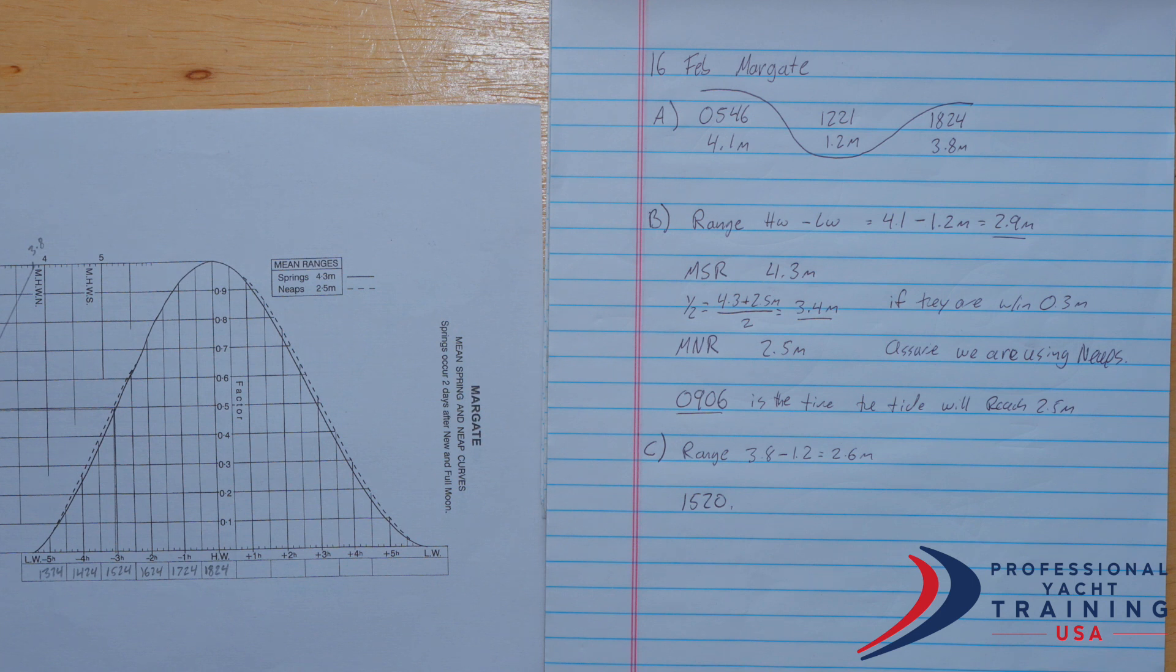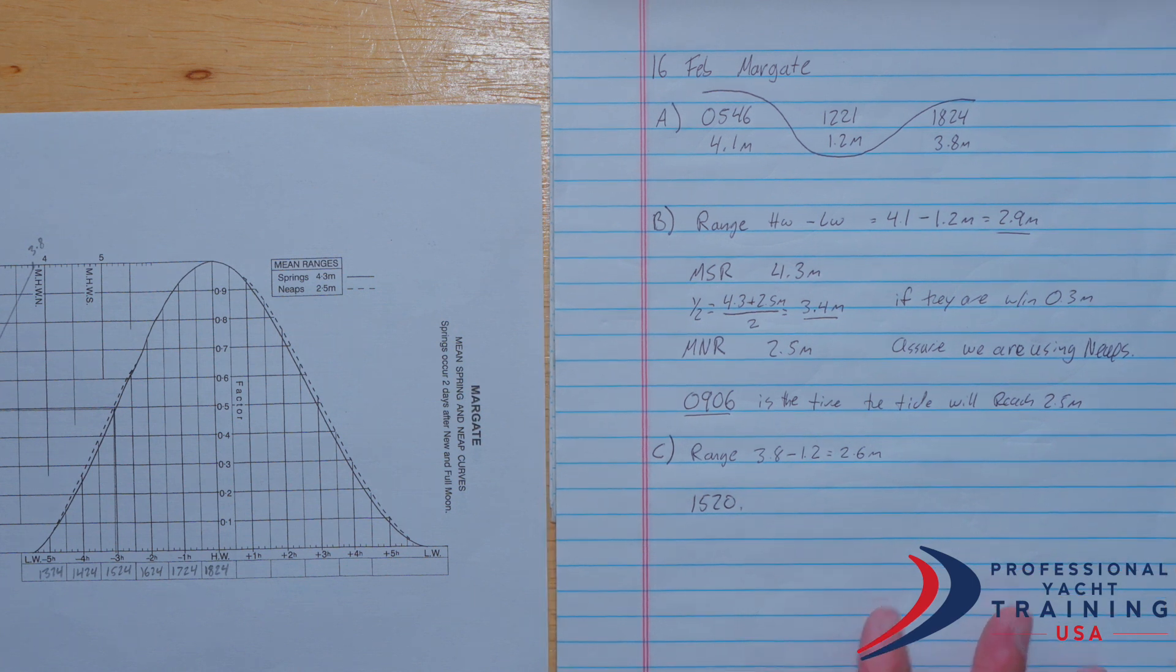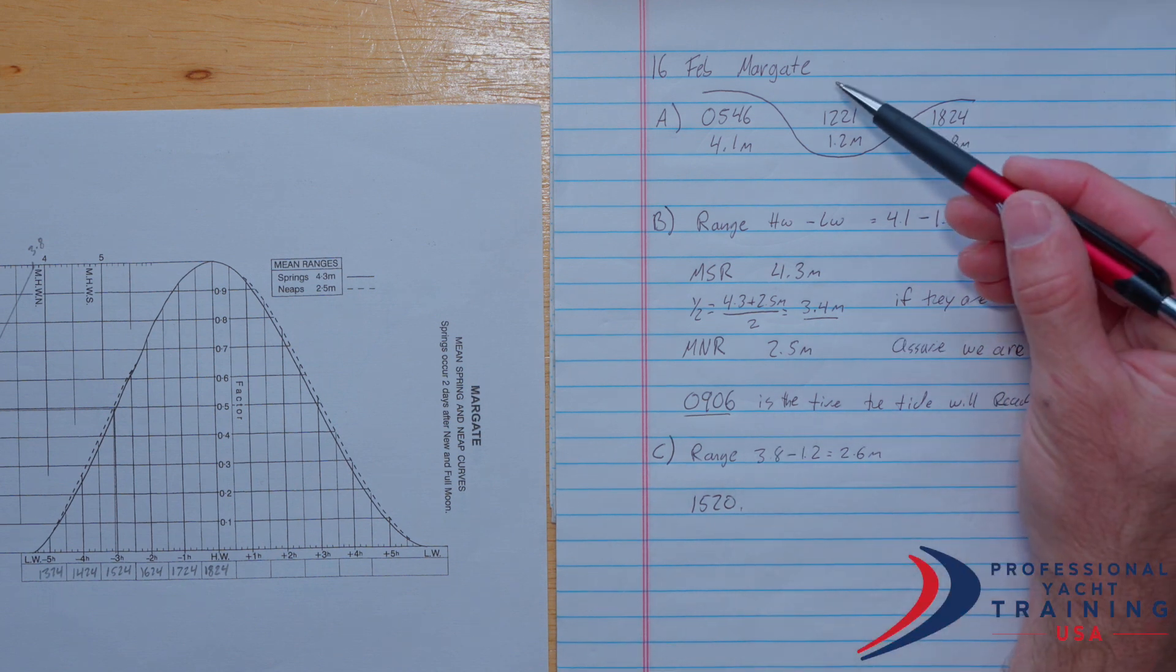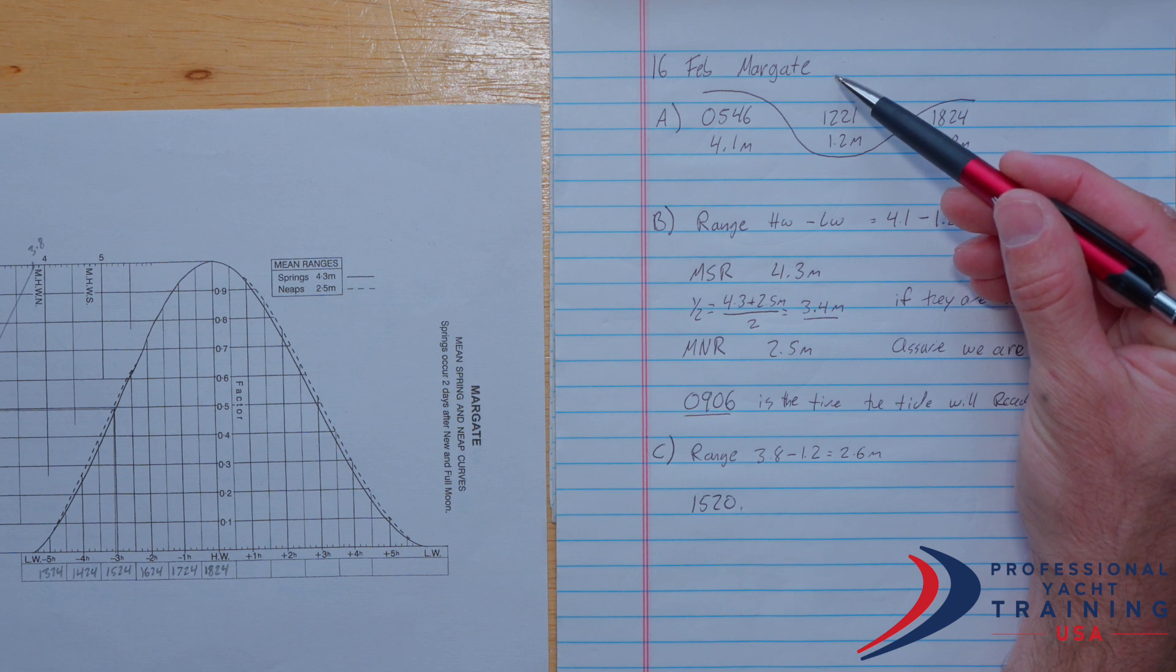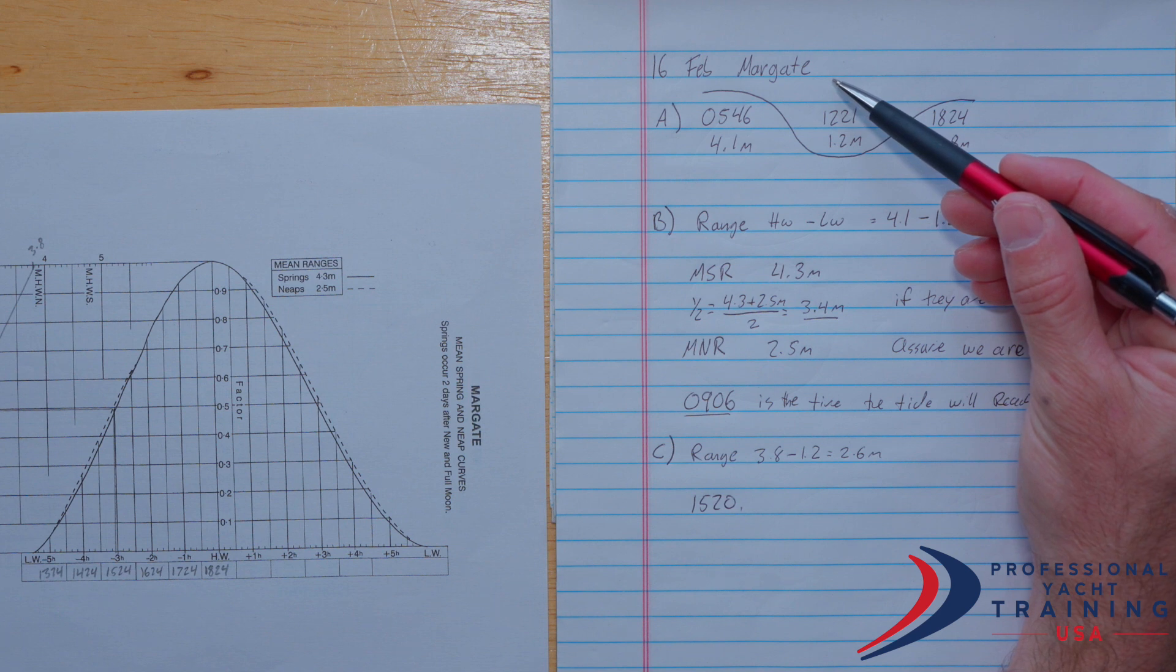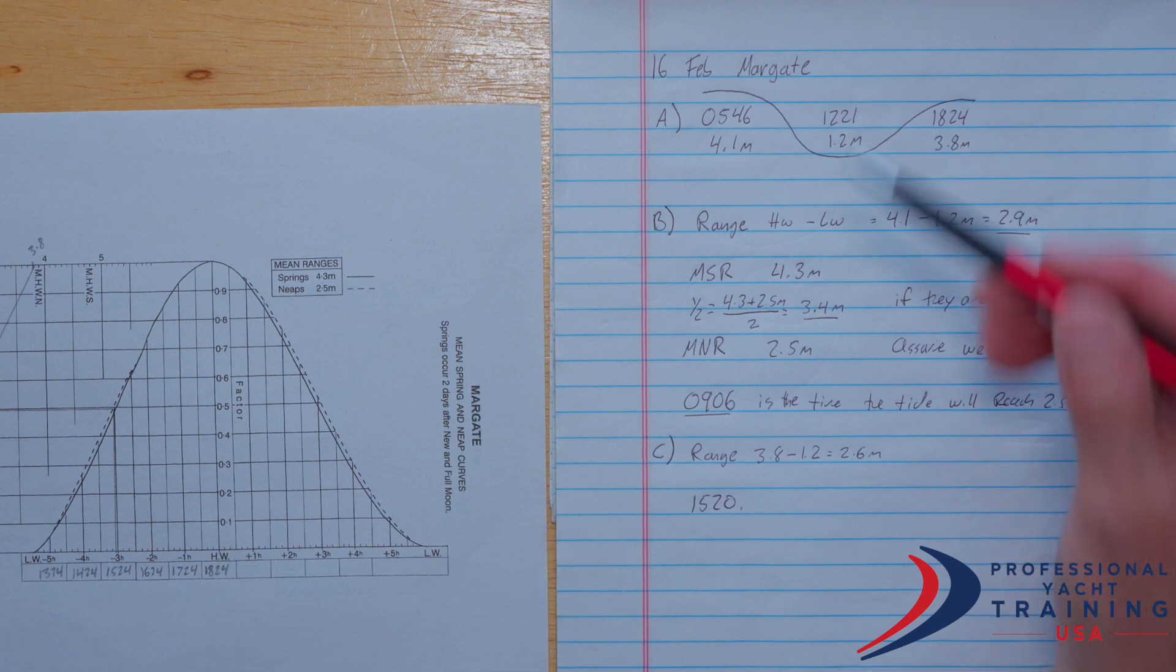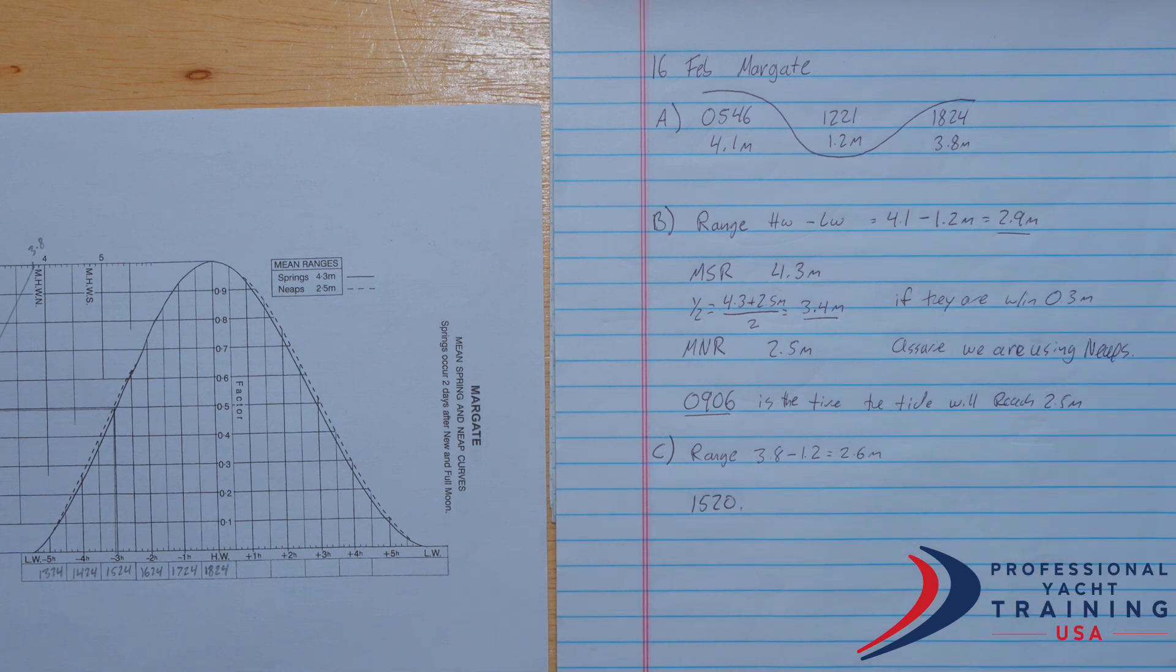And that'll be problem number one done. Just a couple extra things that I might note that you'll run into on other problems. This particular problem was in February, and the time zone in England in February is going to be normal Greenwich Mean Time. So for this particular problem, I've not had to deal with British summertime or daylight savings, but where applicable, don't forget to factor in your daylight savings time. And each part of this problem asked us for time as an answer.